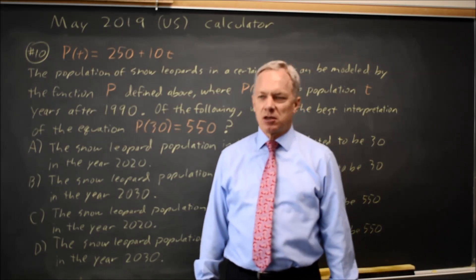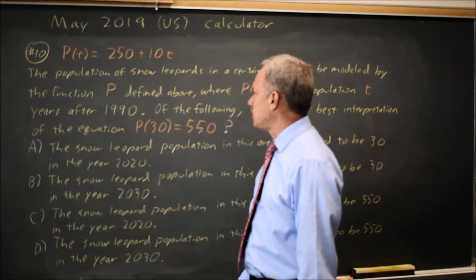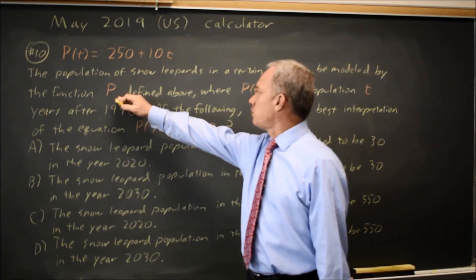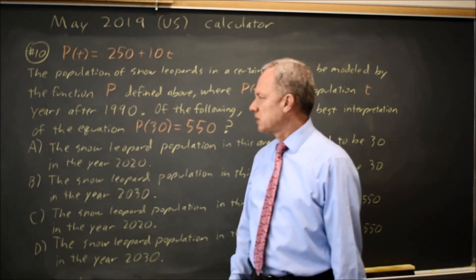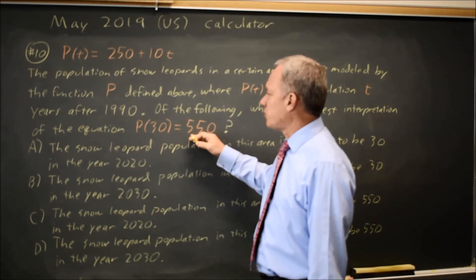This is calculator question number 10. College Board gives us an equation, P(T) = 250 + 10T, where T is years after 1990, and P is the population of snow leopards. They ask which is the best interpretation of P(30) = 550.